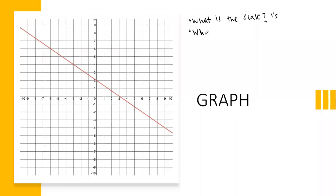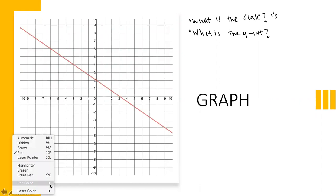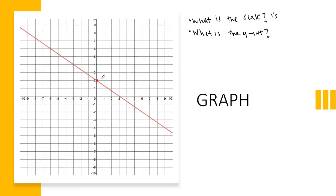My second question is: what is the Y intercept? It's two. How do I know it's two? That's where it hits the Y axis. The Y intercept is positive two — it hits the Y axis right here at two. I'm super confused why people are messing up on this part. It's just that simple.